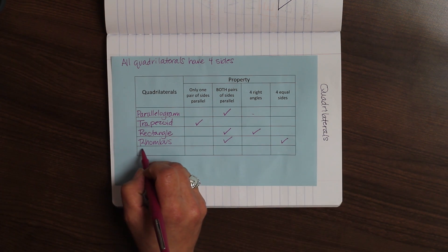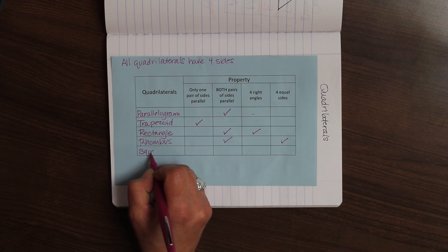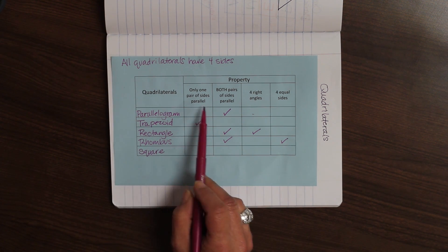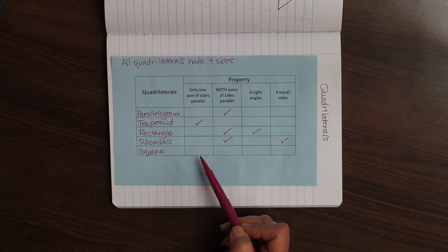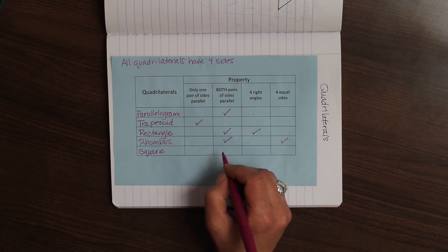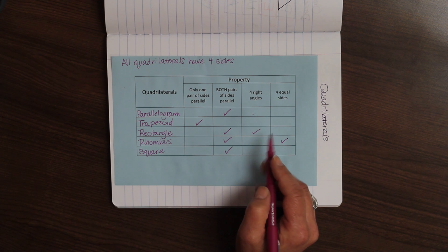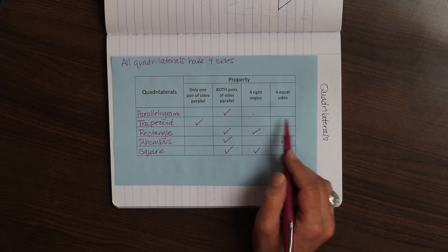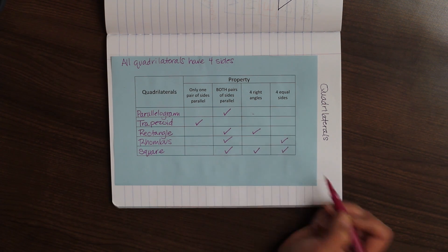And the last thing we're going to talk about is that lovely square. Only one pair of sides are parallel? No. We know that's not true. Both pairs of sides are parallel? Yes. Four right angles? Yes. And four equal sides? Yes.